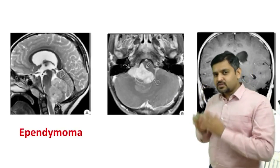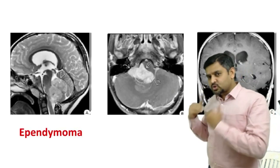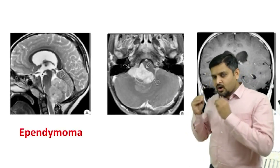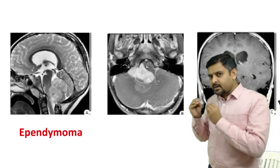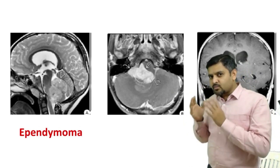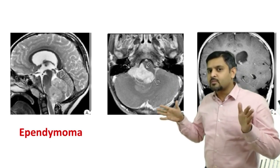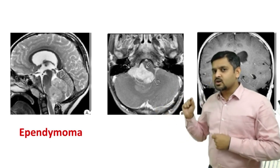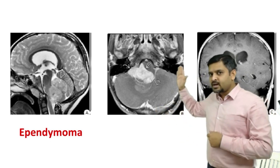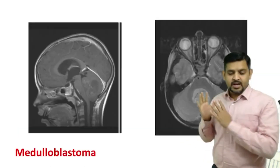If you see a mass which is in the posterior fossa coming from the ependymal lining, and importantly going along the foramen of Luschka, always think of ependymoma.